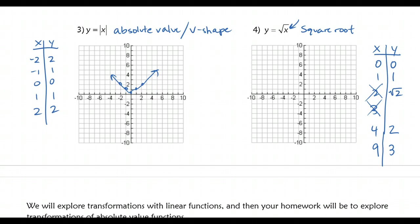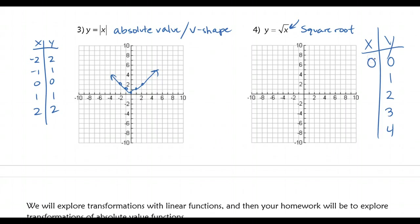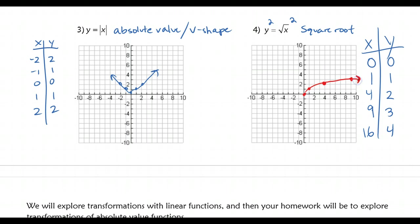You could also flip that idea and pick y-values first. Instead of picking x-values, select y-values of 0, 1, 2, 3, and 4 — since those are easy to plot. What would I put inside the function to get those results? Think of it backwards: square each y-value. Square 1 gives 1, square 2 gives 4, square 3 gives 9, square 4 gives 16. So my points are 0,0; 1,1; 4,2; 9,3 — and the square root function starts to look like this curve. That is the mother function for a square root graph.